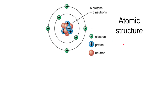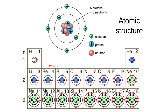There are four elements you need to be familiar with. Hydrogen has one proton in its nucleus and one electron in its outer shell. Carbon has six protons and six electrons — two on the inner shell and four on the outer shell. Nitrogen has seven protons and seven electrons, and oxygen has eight protons and eight electrons.